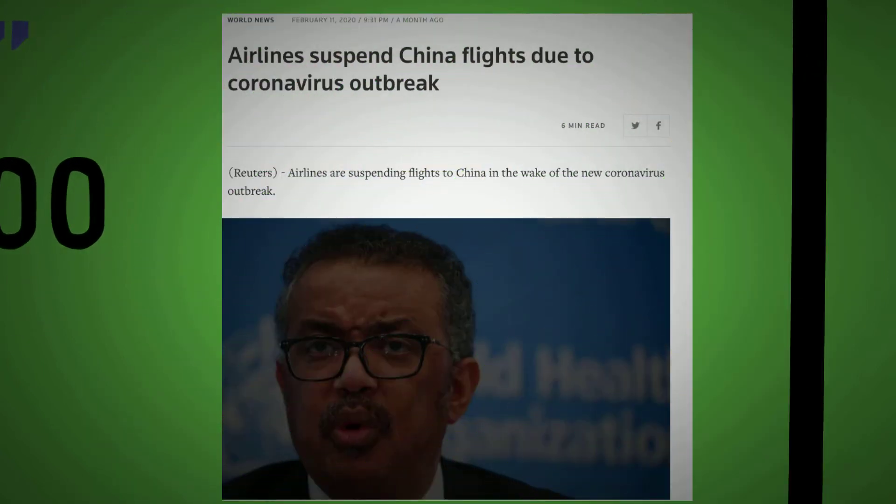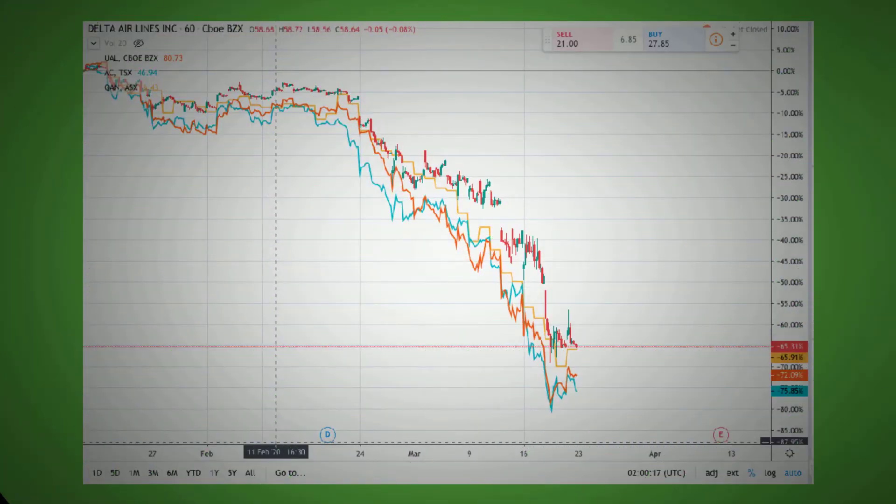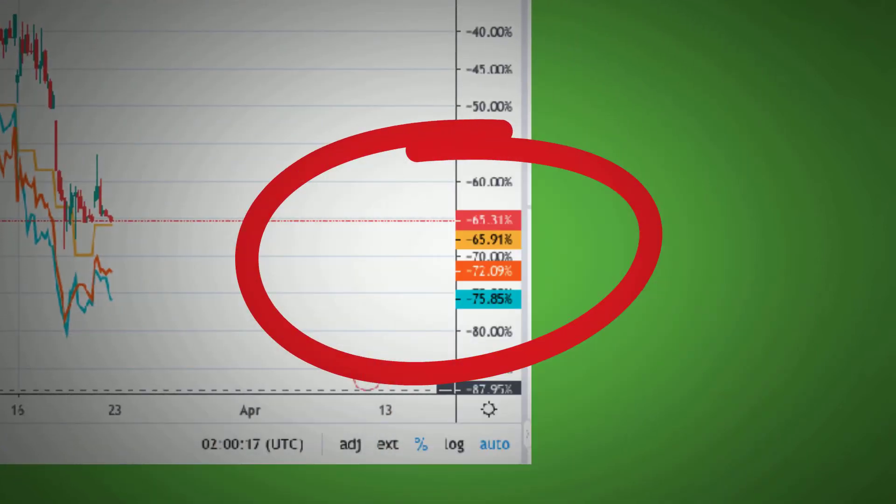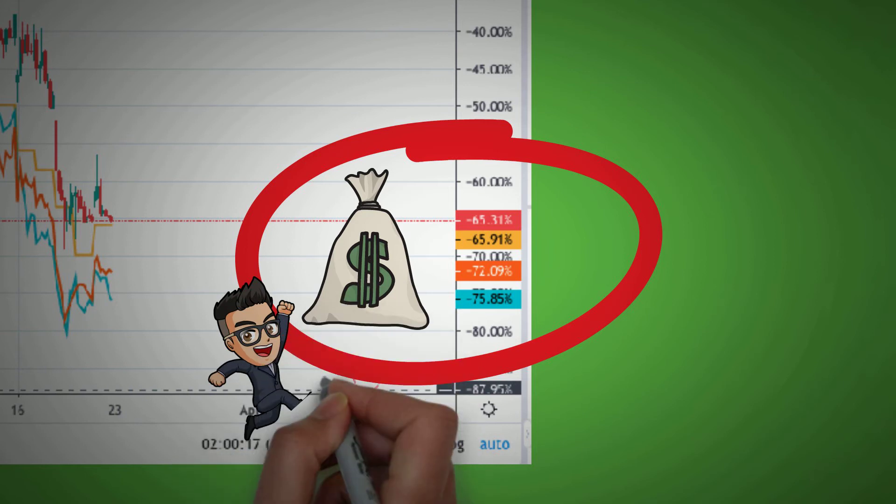For example, remember when they first suspended all the China flights due to the outbreak back on February 11th? At that point, we should know that the airline stocks wouldn't have any upside in the near future. So the best way to profit wasn't to buy the dip, but to open a short position. From this chart, I've logged in a few of the well-known airlines here in North America: Delta, United, Air Canada, Qantas. For the past 6 weeks, they've dropped from 65% to 76%. So that's the amount of profits the shorts received if they settled today. There are so many other industries that got hit around the same magnitude as their airlines.